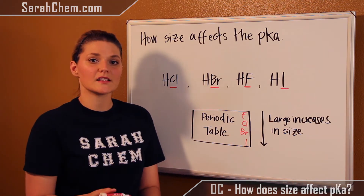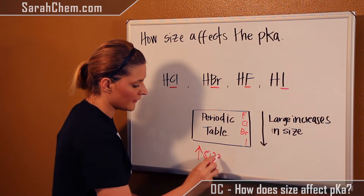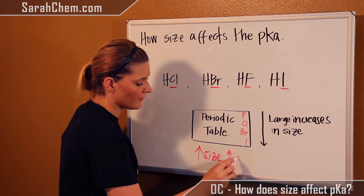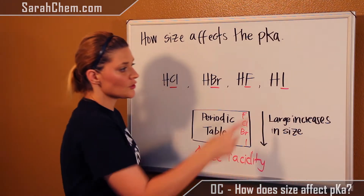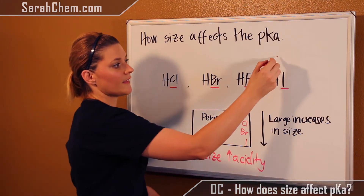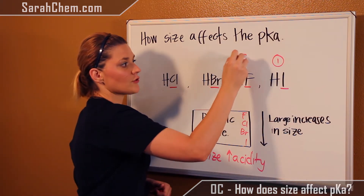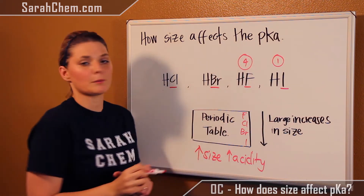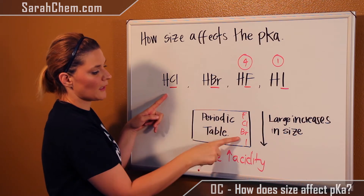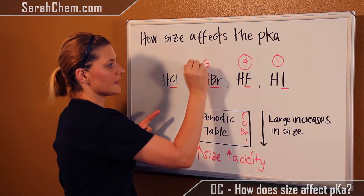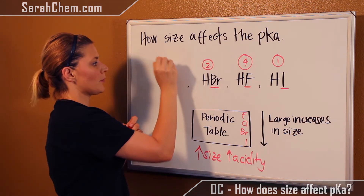The trend is: if you have an increase in size, you're going to have an increase in acidity. So iodine is the most acidic, and hydrofluoric acid would be the least acidic. Comparing the remaining two, because bromine is larger it would be next in line, and then chlorine would be ranked third.